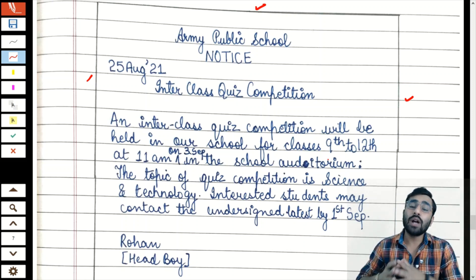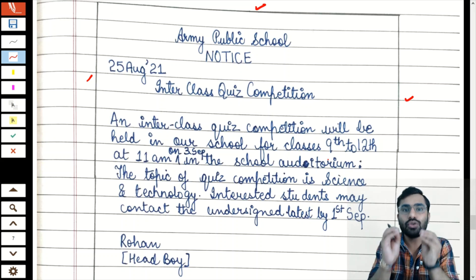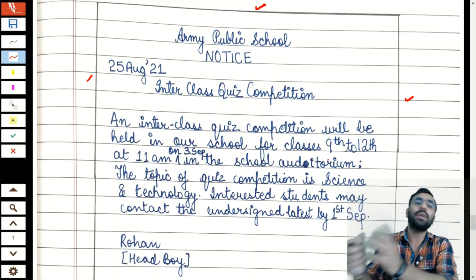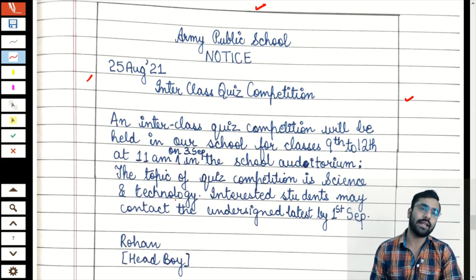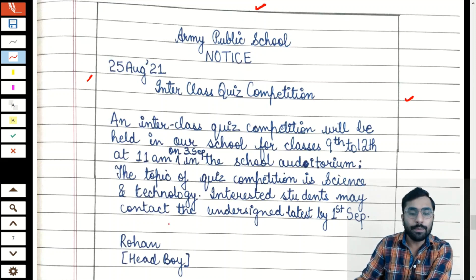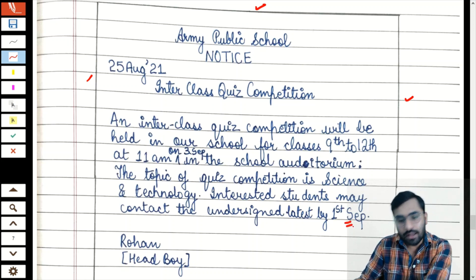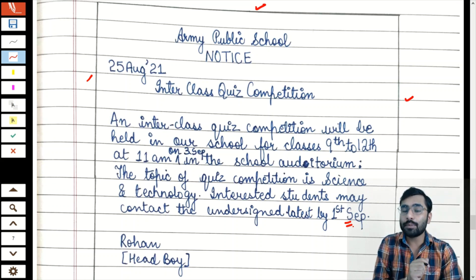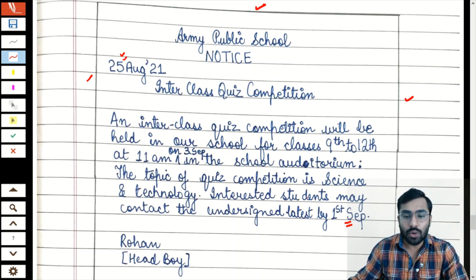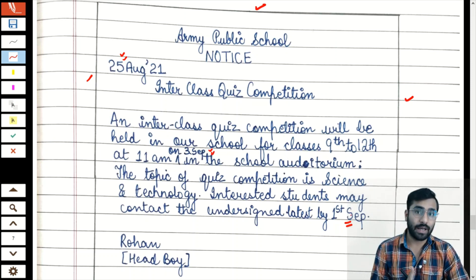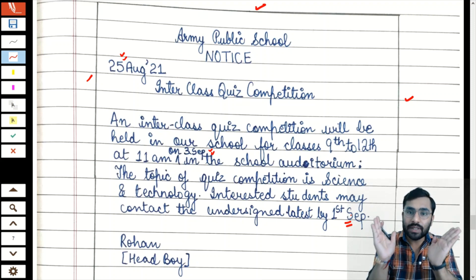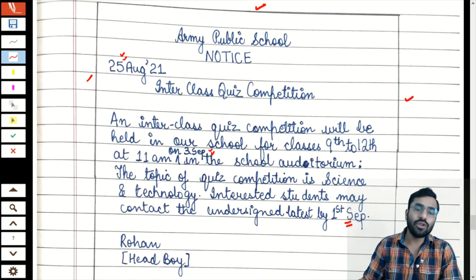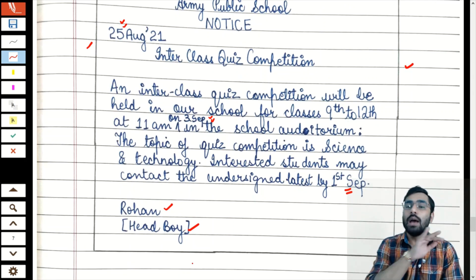Date, time, and venue have been mentioned. Now add a creative sentence — since it's a quiz competition, mention its topic: 'The topic of the quiz competition is Science and Technology.' For the last line: 'Interested students may contact the undersigned by latest 1st September.' Notice that the notice is written on 25 August, the event is on 3rd September, and you're asking for names 2 days before the event — this is logical and makes an impact on the teacher. After the body, leave a line, write your name and designation, then leave one more line and close the box. This is how you do notice writing — follow these tips and nothing can stop you from scoring 3 out of 3.